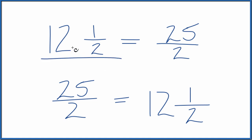So in answer to our question, the mixed number 12 and a half equals the improper fraction 25 over 2, or you could call it 25 halves. This is Dr. B. Thanks for watching.